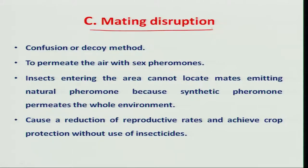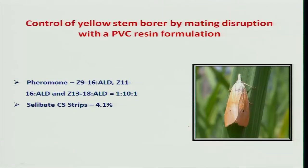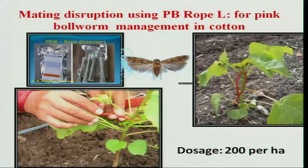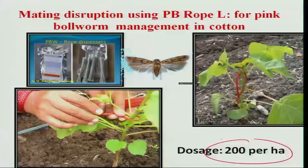Another way pheromones can be utilized in pest management is through mating disruption. This technique creates confusion among the same species. By utilizing synthesized pheromones, you can permeate the whole environment so that the insect cannot identify the same species for its mating, and thereby it dies without mating. This was well studied and utilized in case of paddy stem borer and also in case of pink bollworm, where putting 200 PVC rope dispensers per hectare can reduce the population of pink bollworm. The role of these pheromones is well established and still much work has to be done in this direction for better utilization in pest management programs.